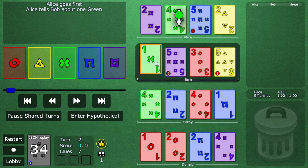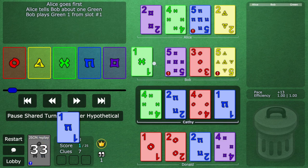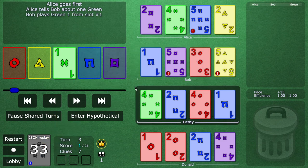Sure enough Bob can go ahead and just play the card. We call this a one-for-one. One clue, one card. Honestly that's not a great exchange because remember we only have eight clues to start. So when you can manage it, it's actually really awesome if you can get multiple cards touched with a single clue.